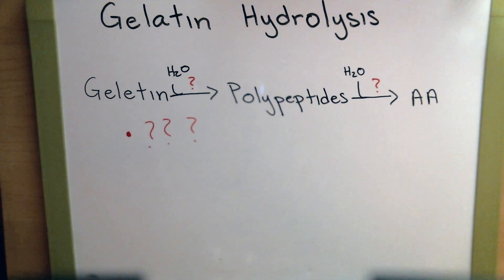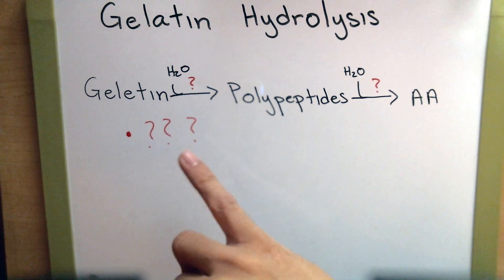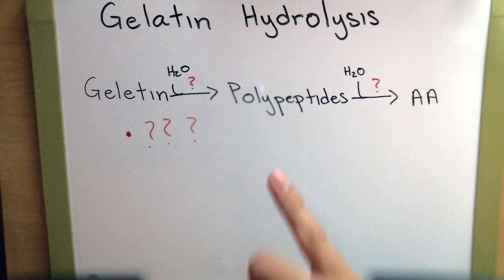Now there's a specific enzyme that's used in conjunction with water in both steps. Remember hydrolysis means water breaking, so we need water. But it uses a specific enzyme in order to break down the gelatin to polypeptides and then polypeptides to amino acids. What is this enzyme?